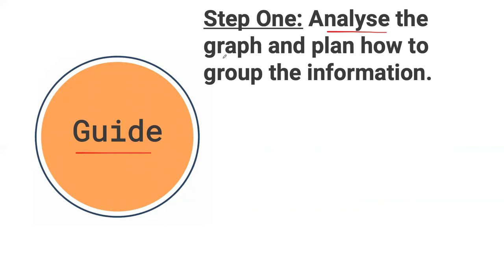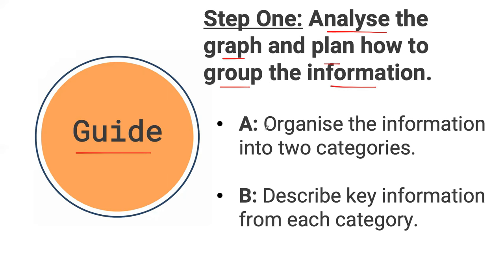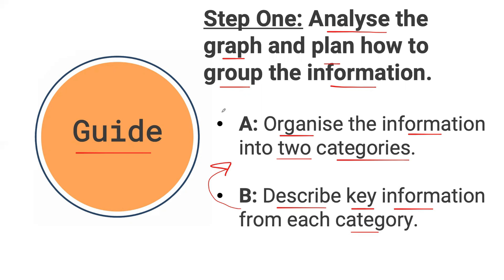Step one is analyzing the graph and planning how to group the information. You can group the information in two ways. The first thing is to organize the information into two categories — keep it at two because this makes it easier to write. You're going to have two body paragraphs, so you can make your two categories your two main paragraphs. Then, when organizing this information, describe the key information from each of these categories before you actually write your essay.